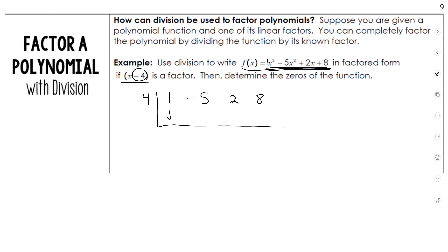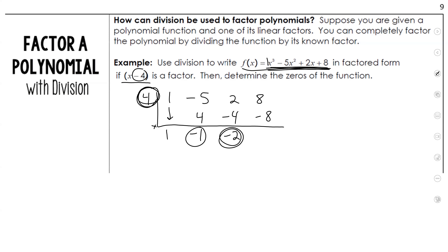Bring down the 1 and multiply. 4 times 1 is 4. Add these together, you get negative 1. Again, multiply: 4 times negative 1 is negative 4. Add these together, this will be negative 2. Now we're going to multiply: 4 times negative 2 is negative 8. And 8 plus negative 8 is 0.